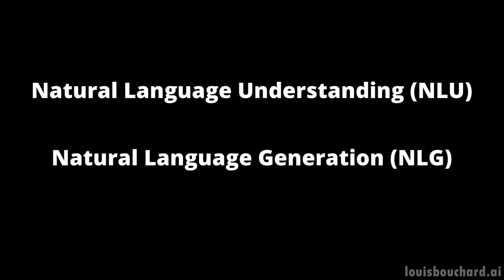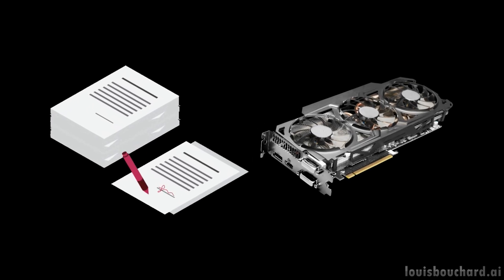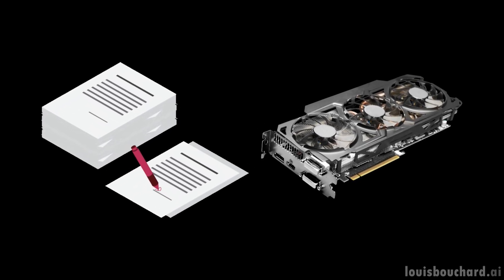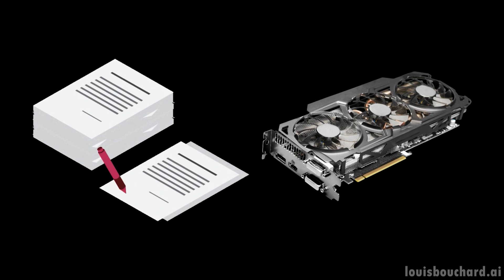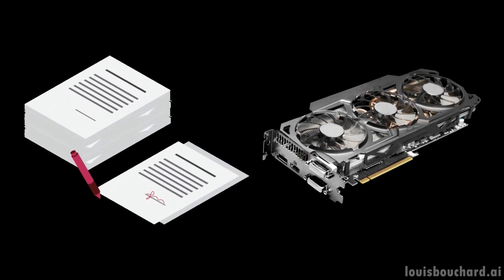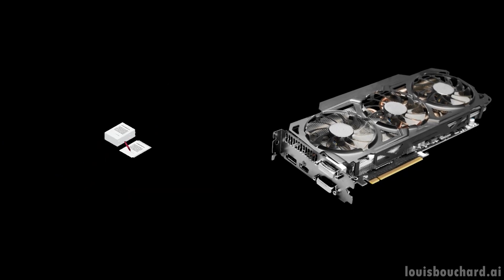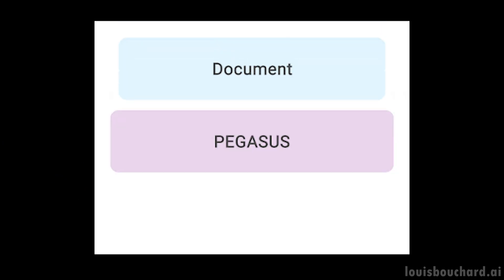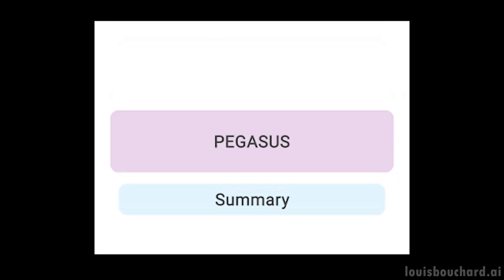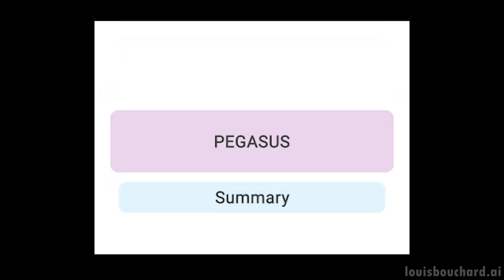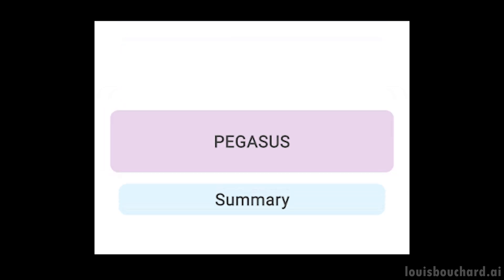But how can you achieve that? With a lot of data and compute power. Luckily enough, this is Google Research. They train their model to replicate our thought process for generating summaries using way too many documents with manually generated summaries. Seeing all these examples, the model does like any good student and ends up being able to generate relatively good summaries for similar documents as it has seen during its training phase. You can see why we need good quality data here.